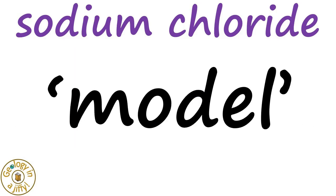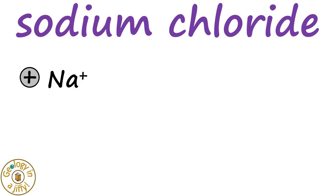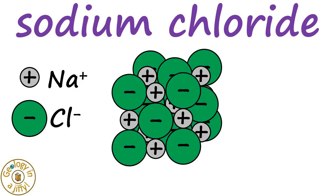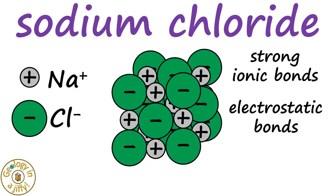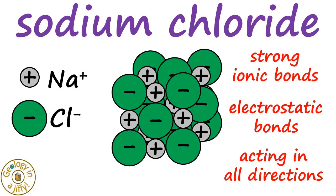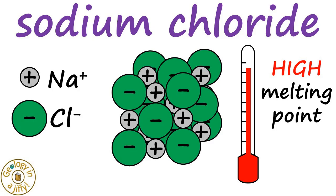We can model sodium chloride with positive sodium ions and negative chloride ions forming a cubic crystal. With strong ionic bonds and electrostatic charges between the ions acting in all directions, sodium chloride has a very high melting point of over 800 degrees Celsius.